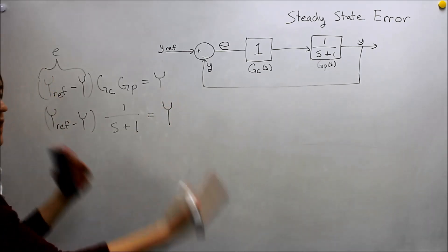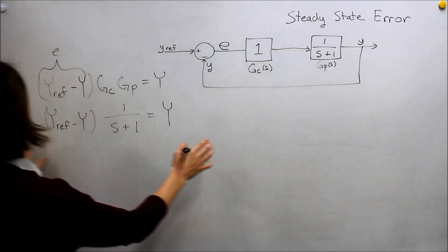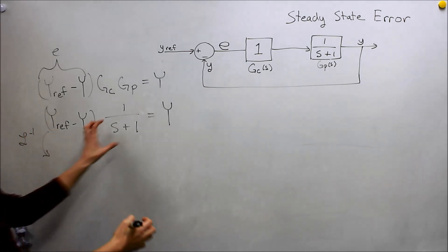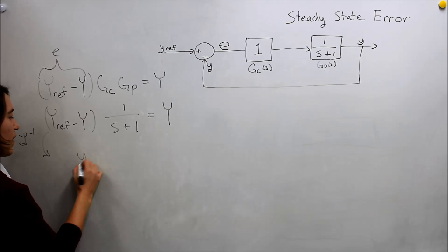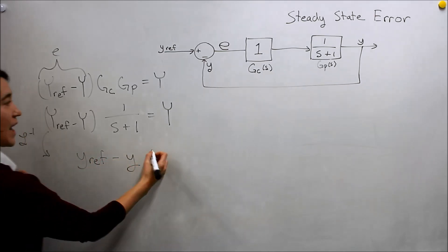We're going to bring this back into the time domain so that we can think about steady state. Let's just first do the reverse Laplace here. I'm going to do two steps at once—I'm also going to multiply this over here. We'll have on this side y_ref minus y, and now we're back in the time domain.